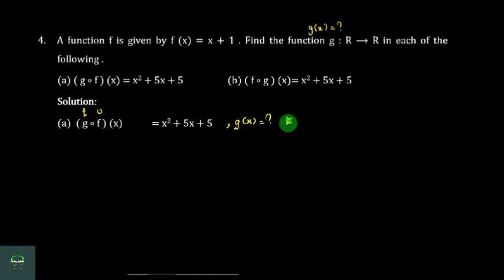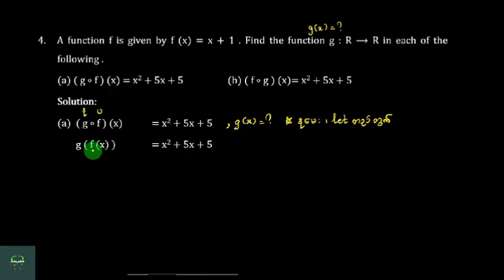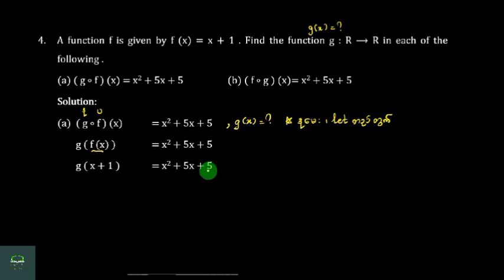They will respond: 2 of x is equal to x squared plus 5x plus 5. If you have to write about x squared plus 5x plus 5.